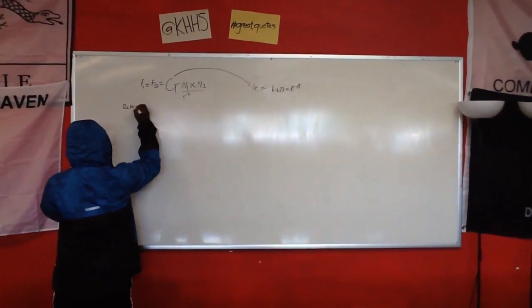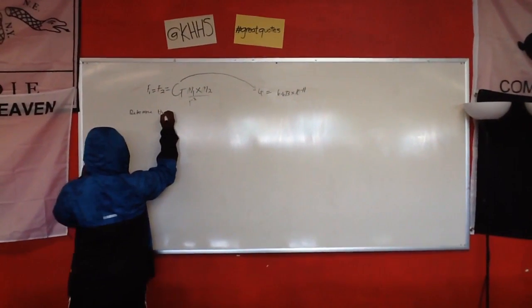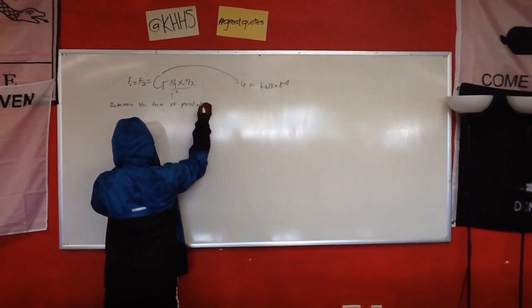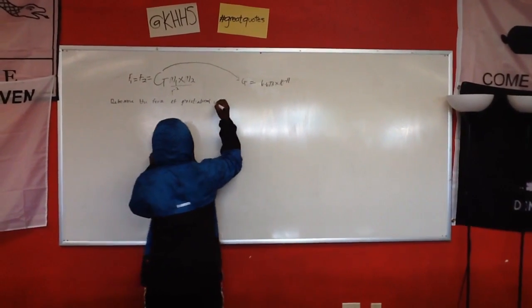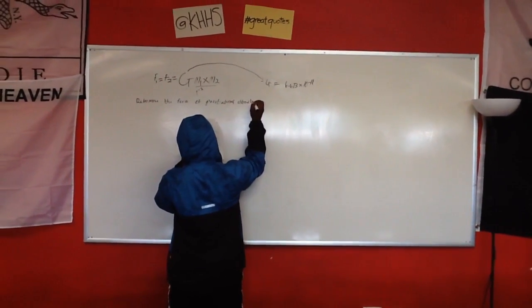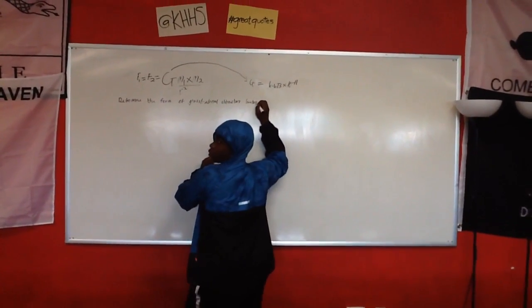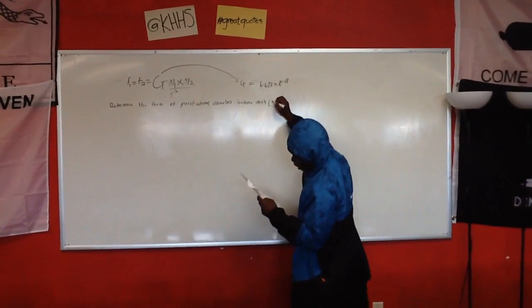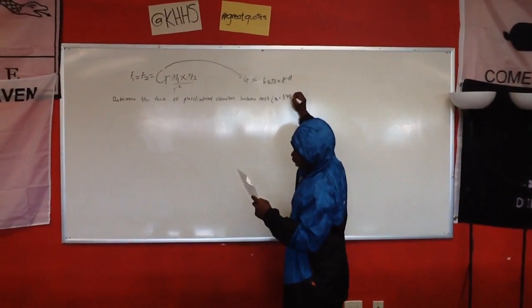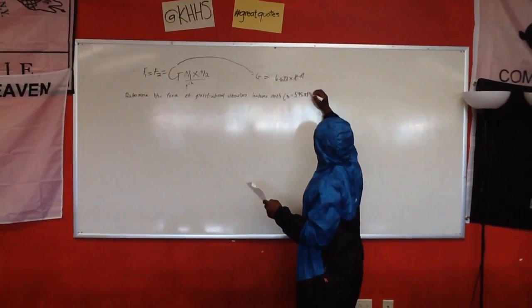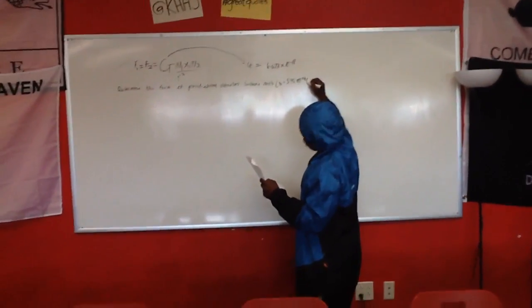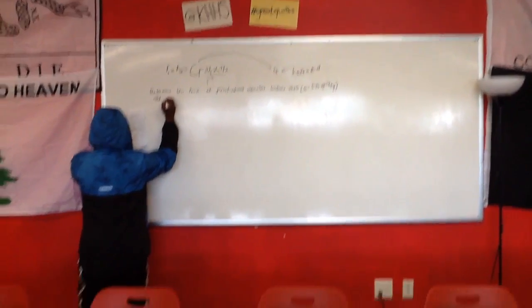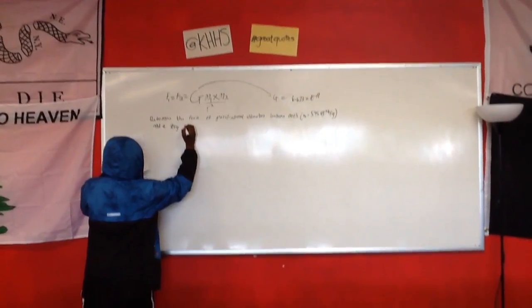It says: Determine the force of gravitational attraction between Earth, which has a mass of 5.98 times 10 to 24 kg, and a 70 kg person.